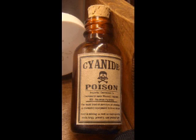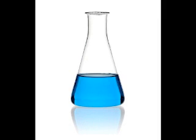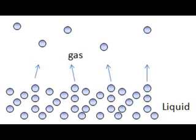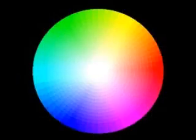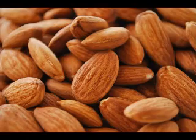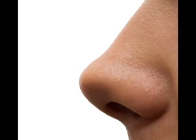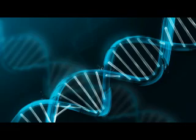Hydrogen cyanide is a highly toxic substance, both in liquid and gaseous forms. As a liquid, it is slightly acidic and pale blue in color. Its boiling point is at 78 degrees Fahrenheit, at which it transitions into a deadly gaseous form. Hydrogen cyanide gas is colorless, and it smells similar to bitter almonds, though the ability to sense that scent is a genetic trait present in only a fraction of humans.